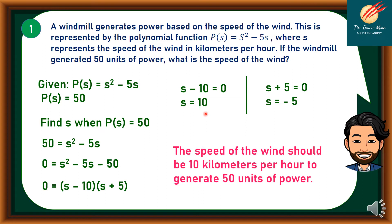Therefore, we can say that the speed of the wind should be 10 kilometers per hour to generate 50 units of power.